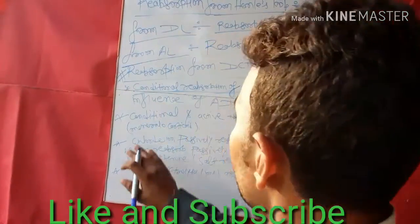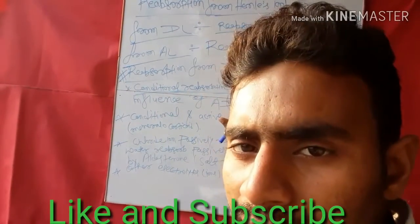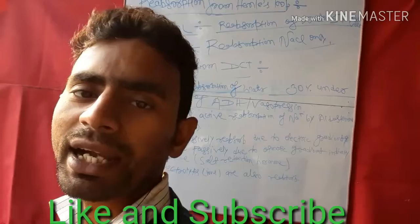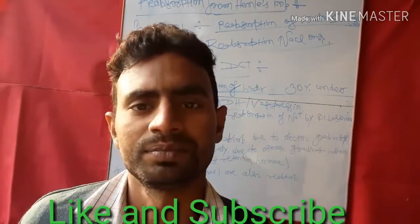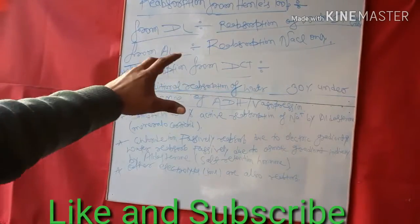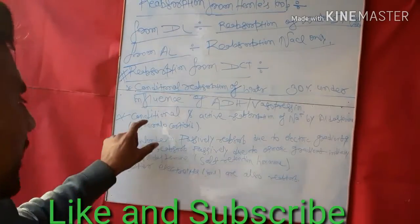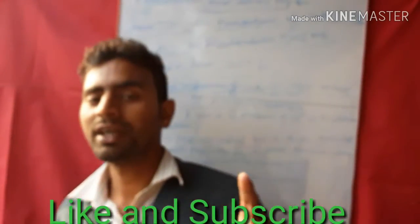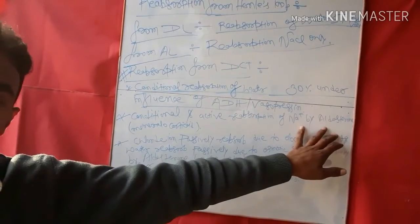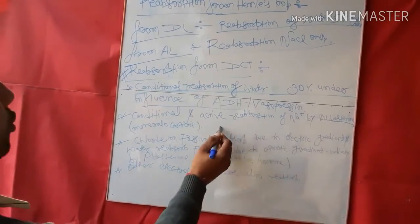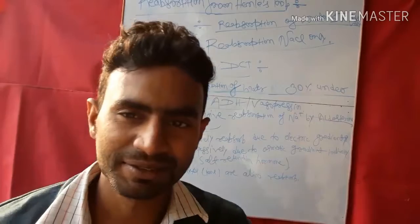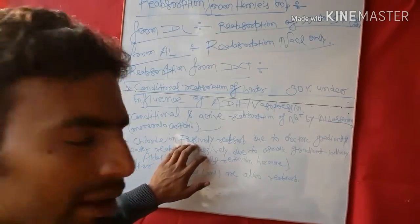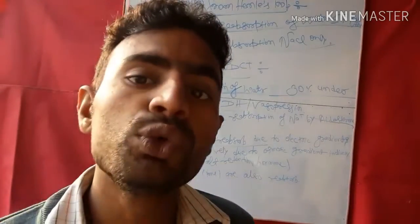First: conditional reabsorption of water — 30 percent — under the influence of ADH, also known as vasopressin. Second: conditional and active reabsorption of sodium ions by aldosterone. Aldosterone is a mineralocorticoid hormone that promotes sodium reabsorption.